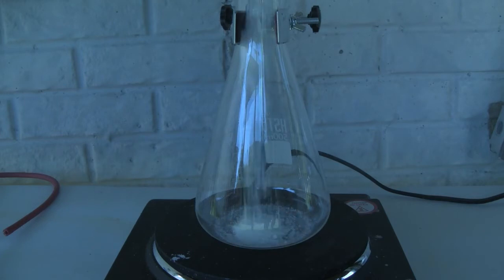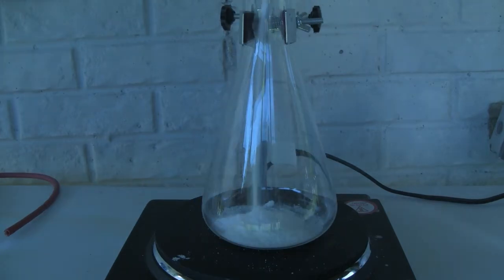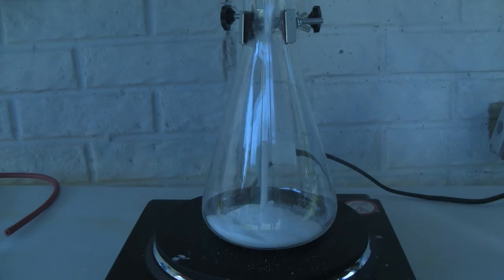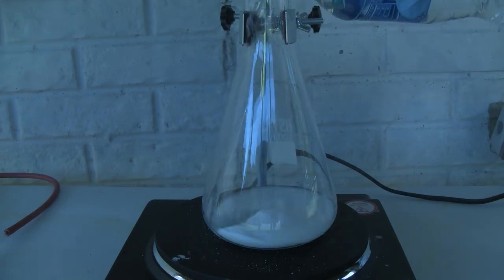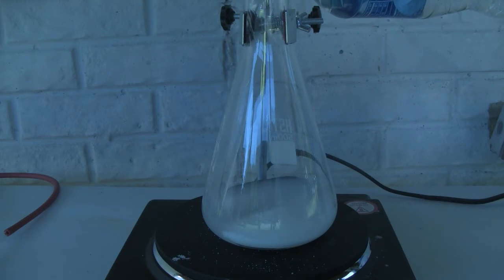To a 500 milliliter flask the sodium nitrite and ammonium chloride were dissolved in about 250 milliliters of distilled water. The solution here is a bit cloudy but this is due to the fact that my ammonium chloride source is not particularly pure.